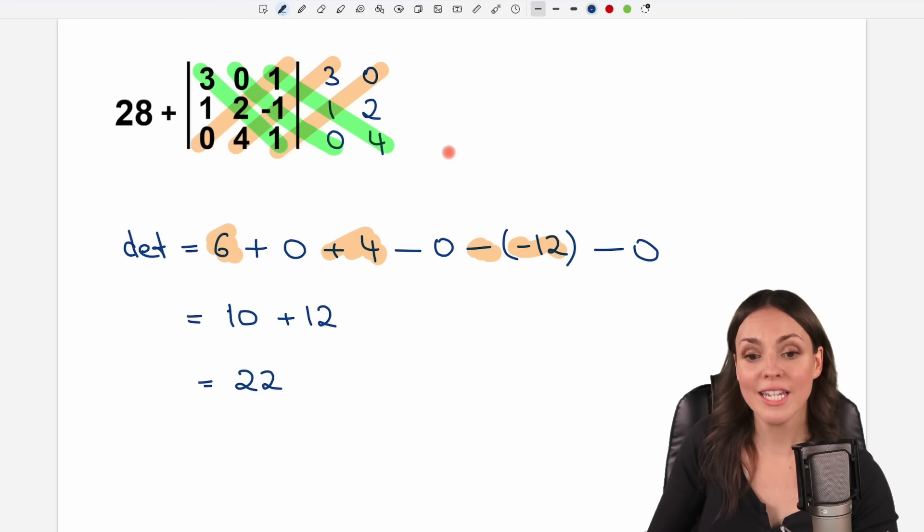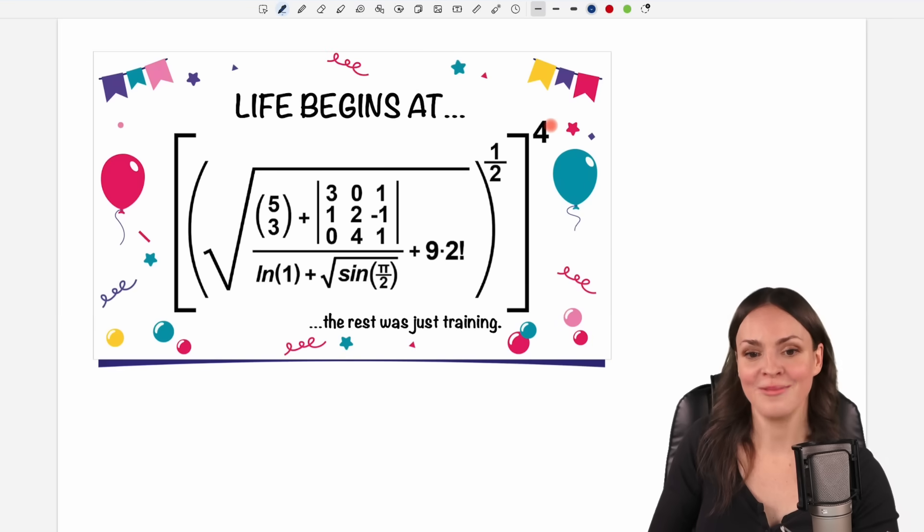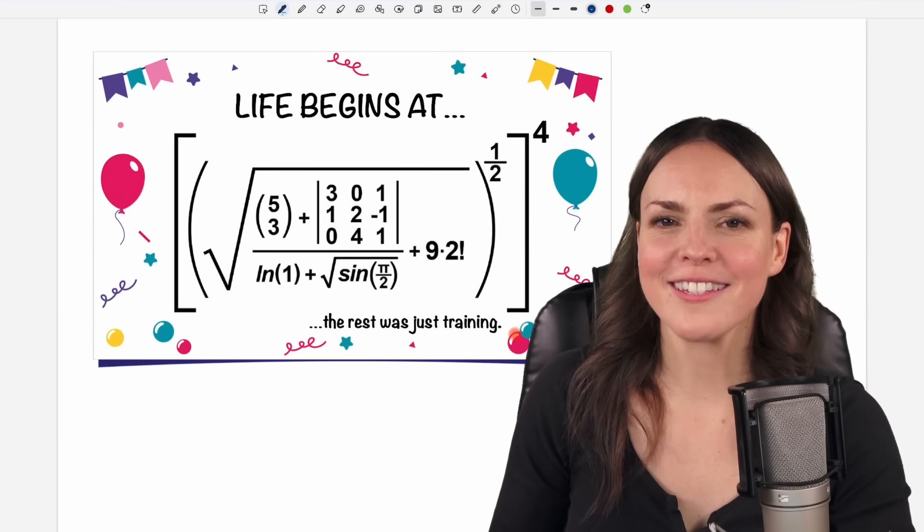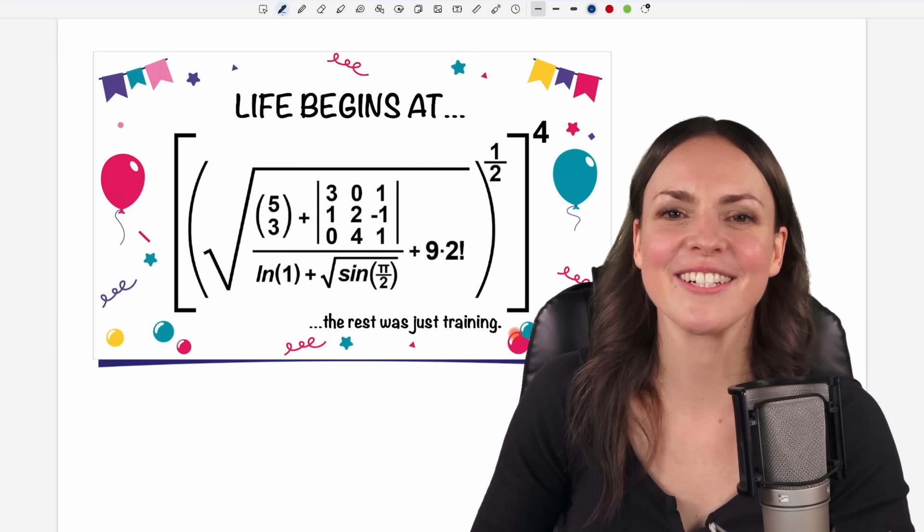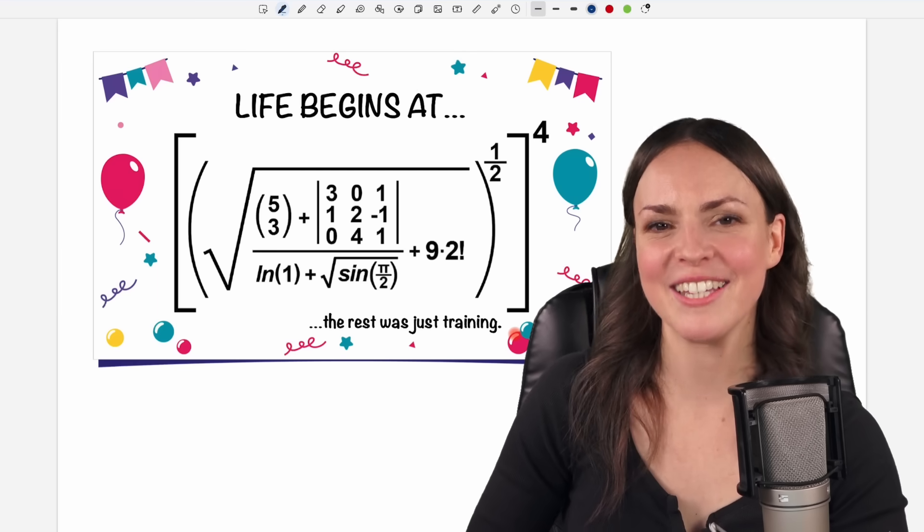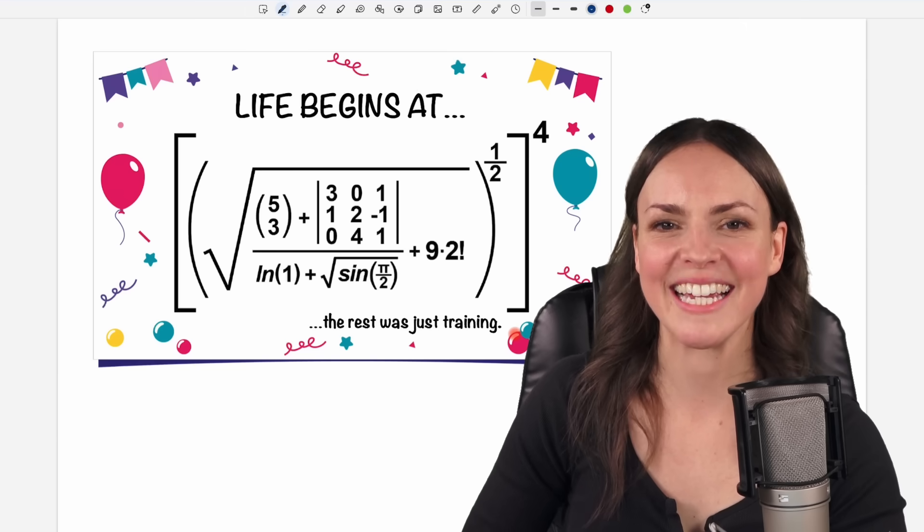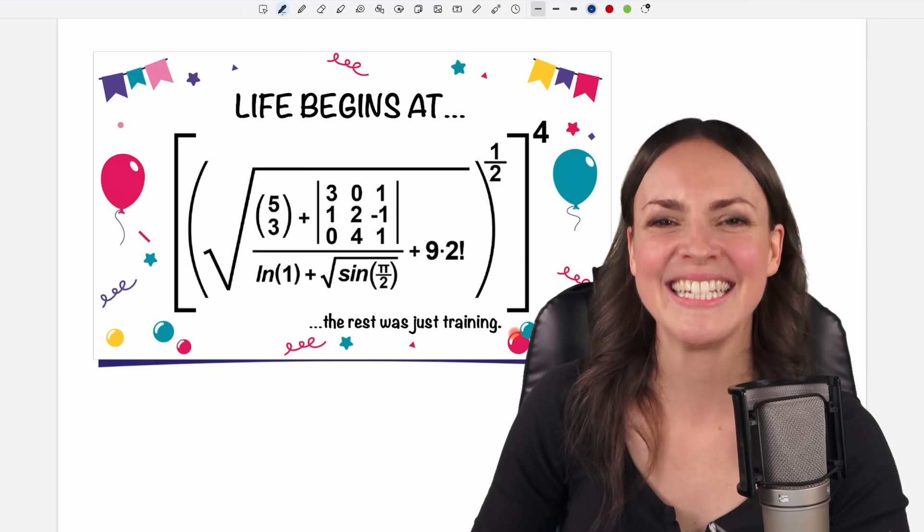28 plus 22 equals 50. So life begins at 50. The rest was just training. Well, some of us are still in the training. Others might live a wonderful life already. Either way, I wish all of you a wonderful day. And I hope to see you in one of my next videos. Take care.